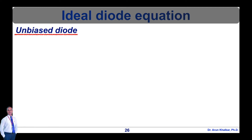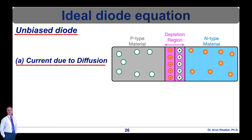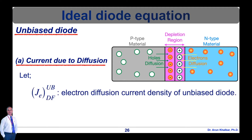When the diode is in an unbiased condition, the current due to diffusion can be calculated. When p and n regions are brought together due to concentration difference, holes in the p region diffuse to the n region and electrons in the n region diffuse to the p region. Using special notations, let capital J_E_DF_UB denote the electron diffusion current density of the unbiased diode.